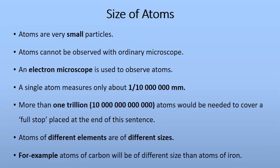Once the structure of the atom was established, questions arose about the size of atoms. Atoms are very, very small — they cannot be observed with the naked eye or an ordinary microscope. A special instrument called an electron microscope is needed to observe atoms. Scientists discovered that a single atom measures only about one over 10,000,000 millimeters, which is an extremely small measurement.